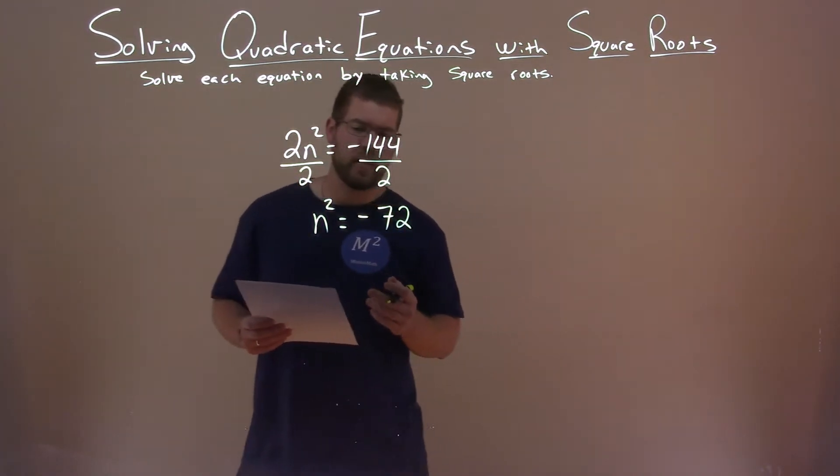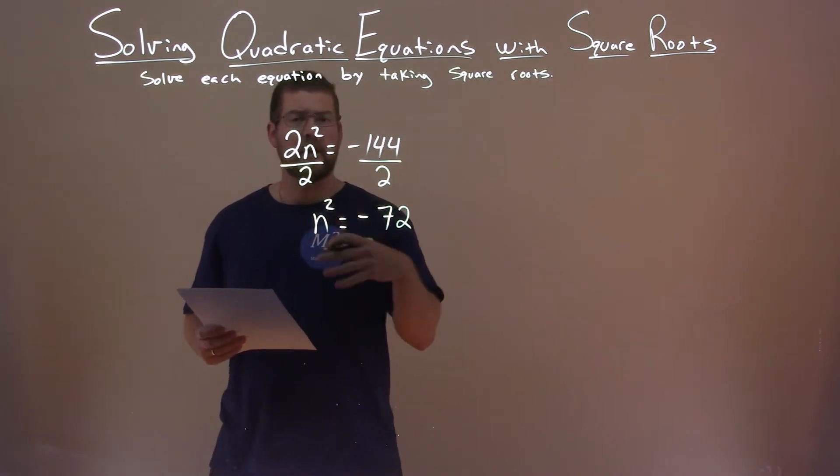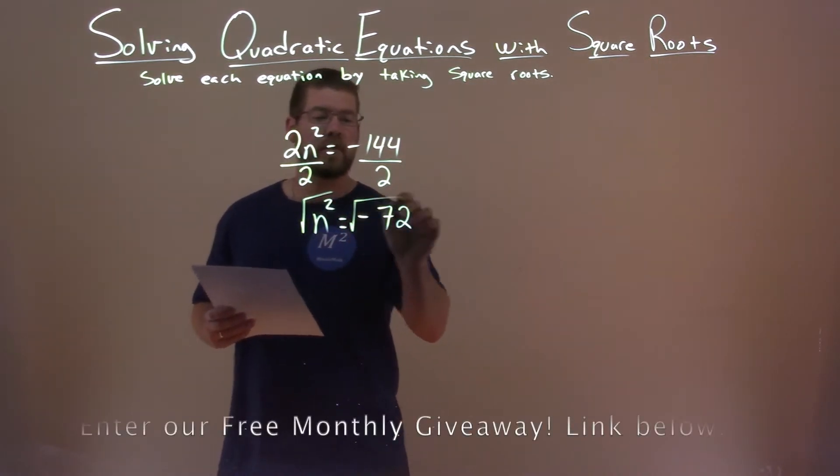So where do we go from here? Well, we have n squared. So to get rid of that n squared, we have to take the square root of both sides.